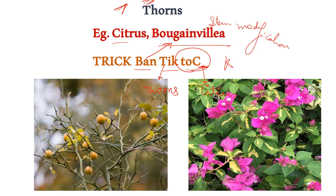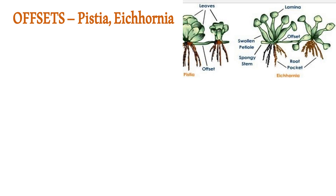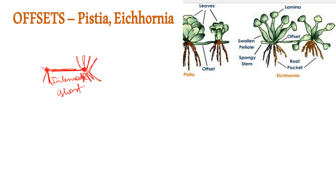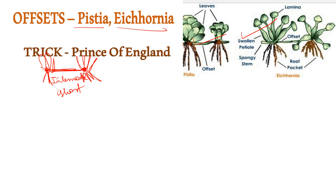Next stem modification is offsets. In offsets, one node grows into a lateral internode that is very short, with each node containing roots plus rosettes of leaves. The examples are pistia and Eichhornia. The trick is: 'Prints of England.' From 'prints' it's pistia, from 'of' it's offsets, and from 'England' it's Eichhornia.